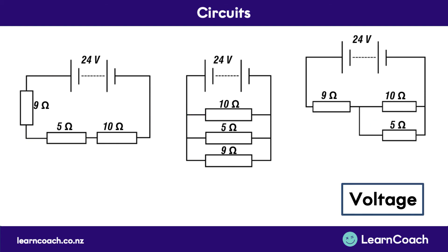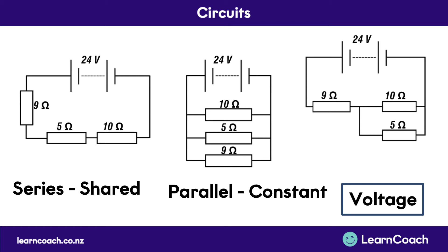Now if we look at voltage, in series circuits the voltage is shared — so the 10 ohm resistor will get more voltage than the 5 ohm resistor; it will get twice as much. Whereas in the parallel circuit, the voltage is constant, so each branch gets 24 volts. In the series circuit, the 9 ohm resistor will get 9 volts, the 5 ohm resistor will get 5 volts, and the 10 ohm resistor will get 10 volts. Whereas in the parallel diagram, each branch gets its own supply of 24 volts.